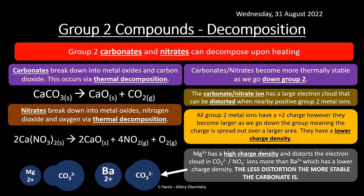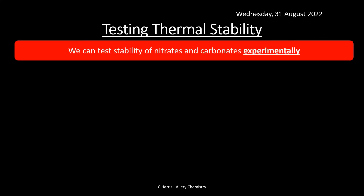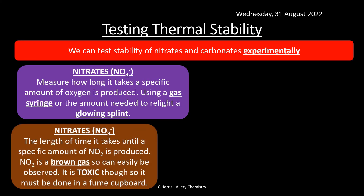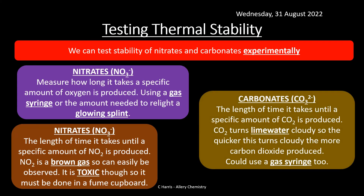We can test thermal stability experimentally for both nitrates and carbonates. For nitrates, we can measure how long it takes for a specific amount of oxygen to be produced using a gas syringe, or use the oxygen to relight a glowing splint. We can also observe the length of time until a specific amount of NO₂ is produced — NO₂ is a brown gas easily observed — but this must be done in a fume cupboard as nitrogen dioxide is toxic and must not be inhaled.